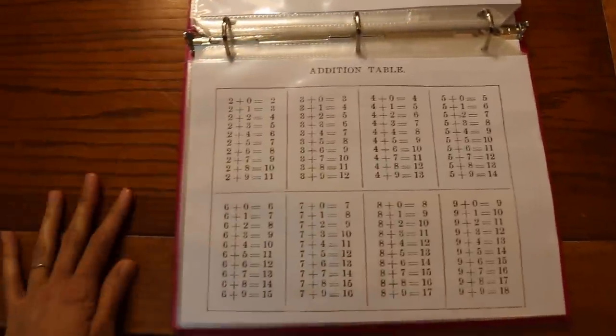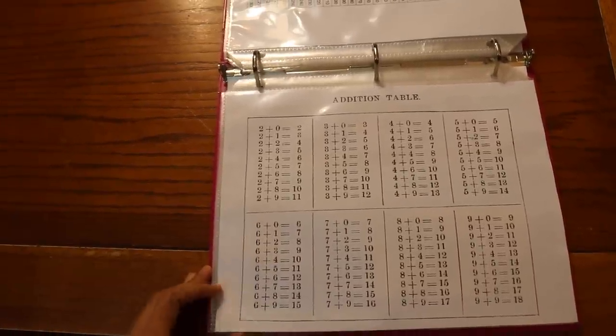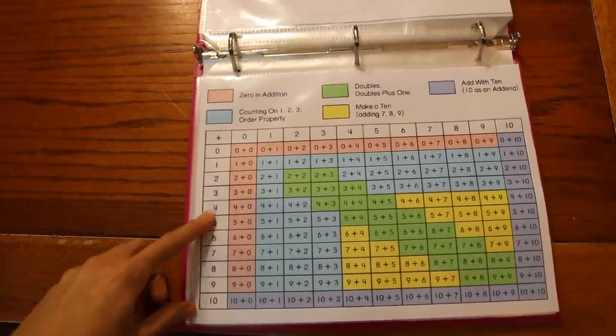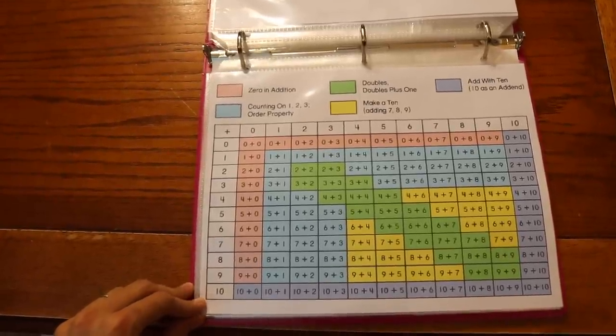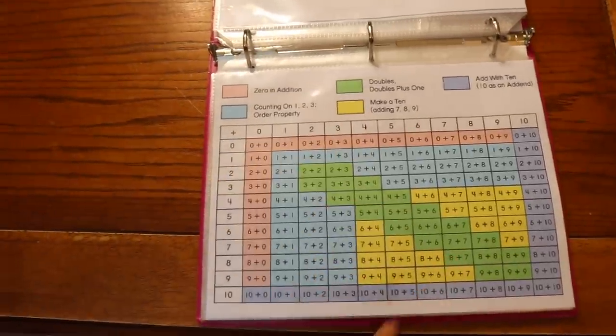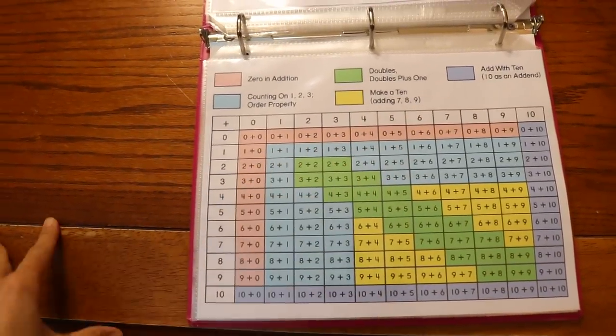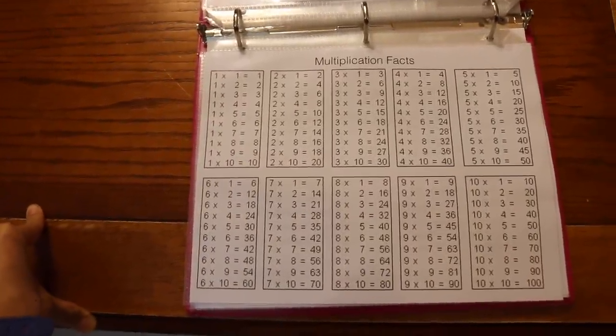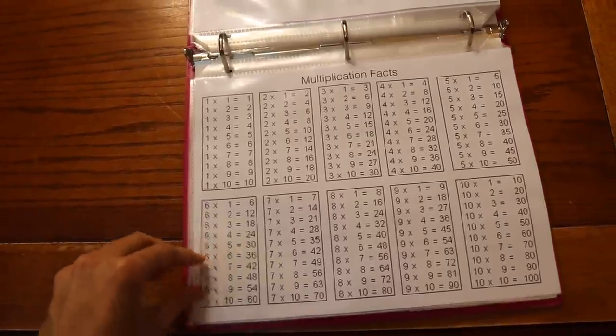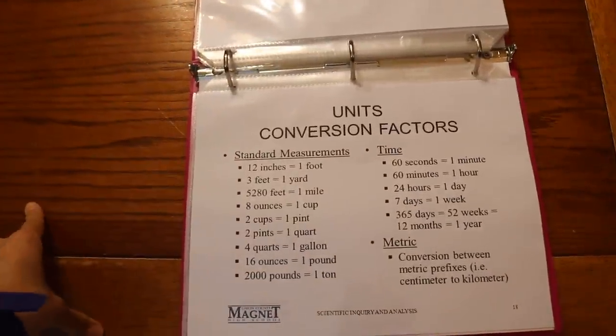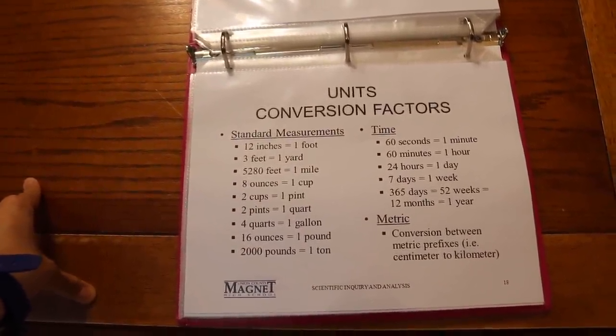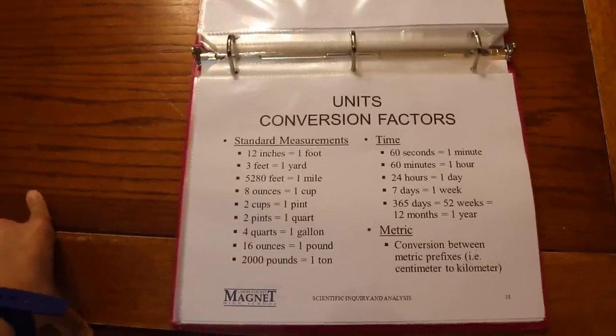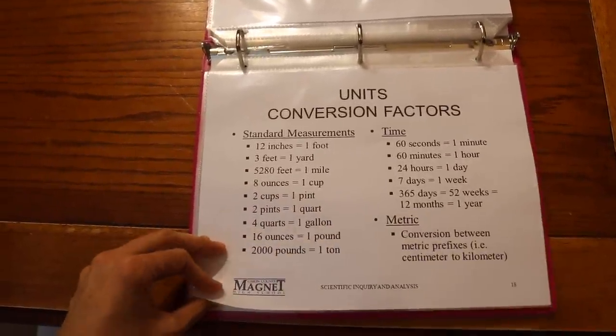Here we have an addition table so that she practices her addition facts. She already has her addition facts memorized. Actually her curriculum is moving on to multiplication now, but these are addition facts, just like little tactics that you can use for addition, like doubles plus one, little mental things that you can use to add. Here's the multiplication facts which she is going into now. Her book is just starting to introduce them. Then we have a unit conversion factors chart that I found online, so like 12 inches equals one foot, three feet equals one yard, 5,280 feet equals one mile. I thought this was a good reference to have here for her to look back to if she needs to.